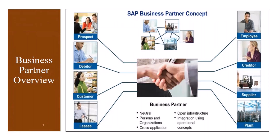The business partner can be an organization, or a group, or a person with whom we have some business interest. This business partner can be a customer, a supplier, an internal employee, another separate outside plant, a prospective customer or supplier, an outside auditor, or an independent government organization. All these are termed as business partners in the system.